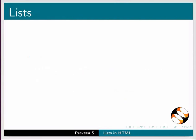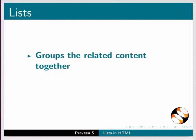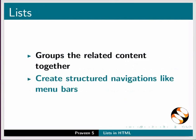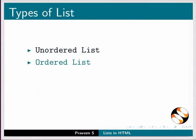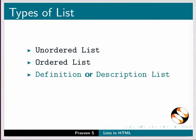In HTML, lists help us to group related content together and create structured navigations like menu bars. In HTML, there are three different types of lists: unordered list, ordered list, and definition or description list.